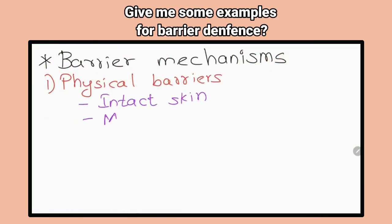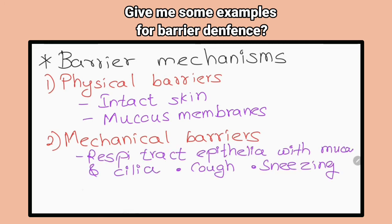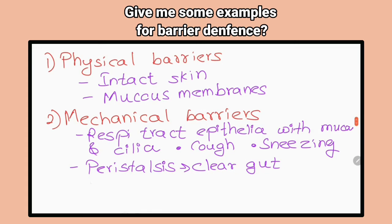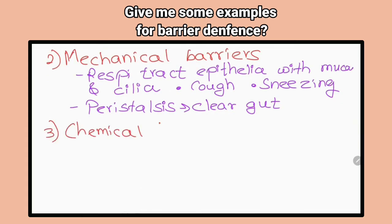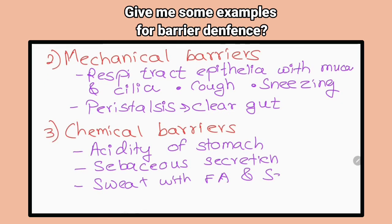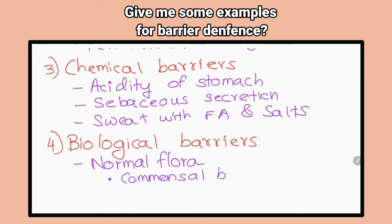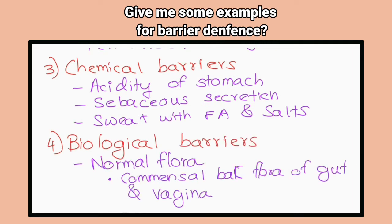Give me examples for barrier defenses. Intact skin, mucous membranes, respiratory tract, epithelium with cilia, acidity in stomach, sweat with salt and fatty acids, sebaceous secretions, non-pathogenic normal flora.